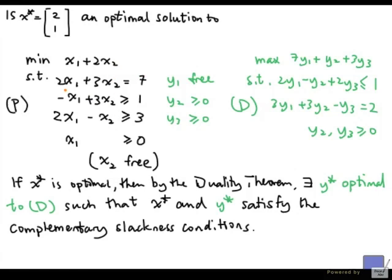If we plug x star into the first constraint, obviously it holds with equality because 2 times 2 is 4 plus 3 is 7. And for the second inequality, I have minus 2 plus 3, that's 1. So that also holds with equality at x star.